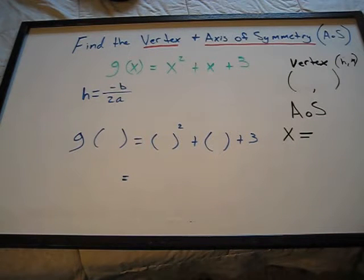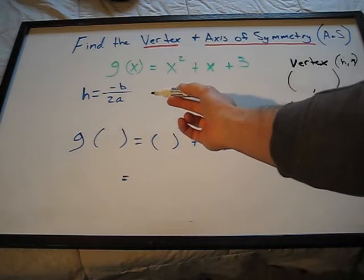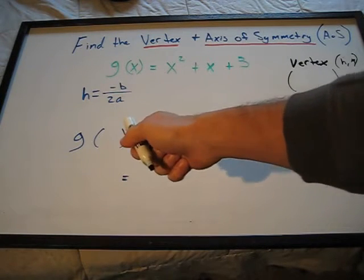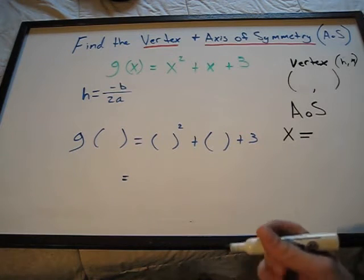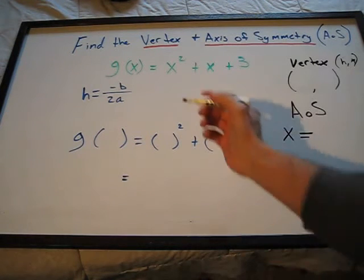First, we're going to find our h point, which will be in our vertex. To do so, we're going to use this formula here, which is h equals negative b over 2a. We'll plug in our numbers.